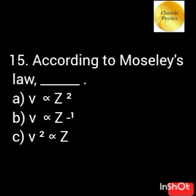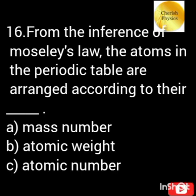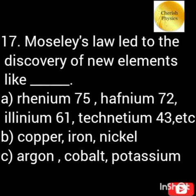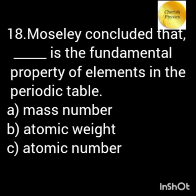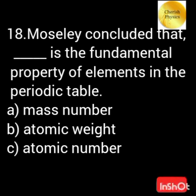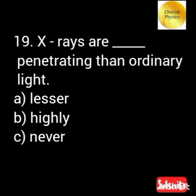According to Moseley's law, the square root of the frequency of X-ray spectral lines is proportional to the atomic number. From the inference of Moseley's law, atoms in the periodic table are arranged according to their atomic number. Moseley's law led to the discovery of new elements. Moseley concluded that atomic number is the fundamental property of the element in the periodic table.